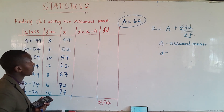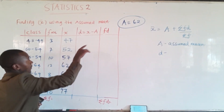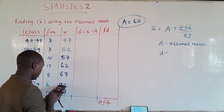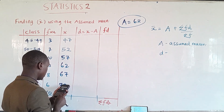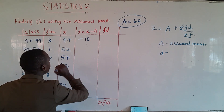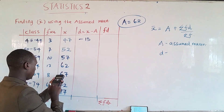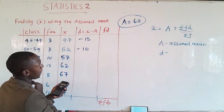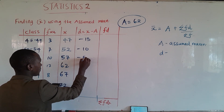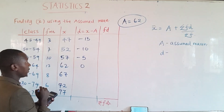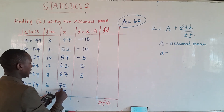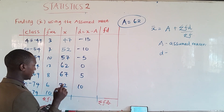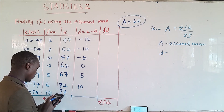With assumed mean a = 62, we find the deviations d = x − a for each class. So: 47 − 62 = −15; 52 − 62 = −10; 57 − 62 = −5; 62 − 62 = 0; 67 − 62 = 5; 72 − 62 = 10; and finally 77 − 62 = 15.